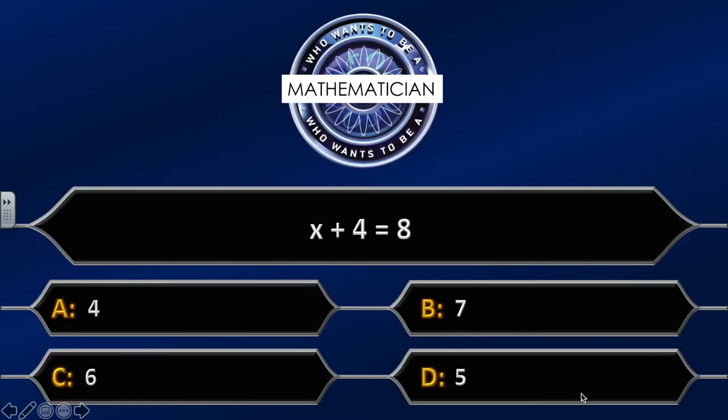Question one: x plus four equals eight. The possible answers are: A equals four, B equals seven, C equals six, D equals five. I'm going to give you ten seconds to answer this question.